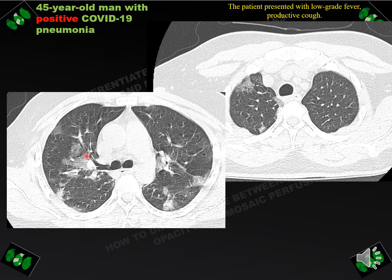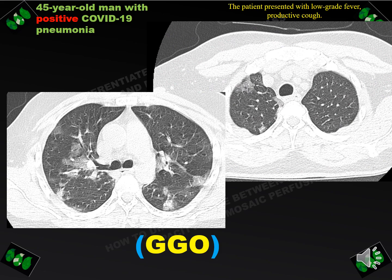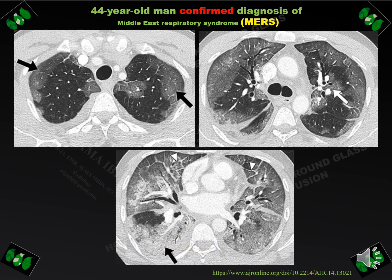Another case shows alternating areas of abnormality within the lung parenchyma — areas of high attenuation and areas of low attenuation. If we look at the blood vessels, we can see the blood vessels in the low attenuation area are preserved. So the abnormality is ground glass opacity in the high attenuation area, in this patient positive for COVID-19. The diagnosis here is ground glass opacity, not mosaic perfusion. Another example confirms normal blood vessel size and amount in the low attenuation area, so the high attenuation area is diagnosed as ground glass opacity.